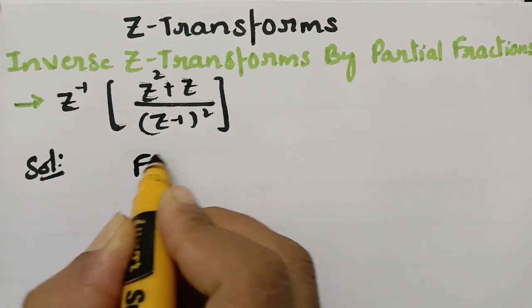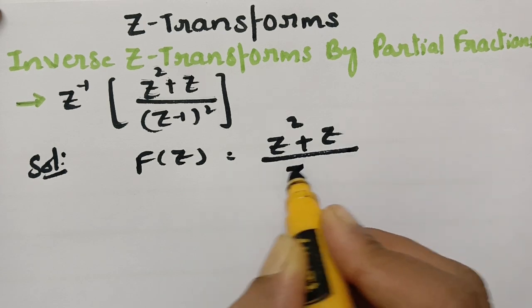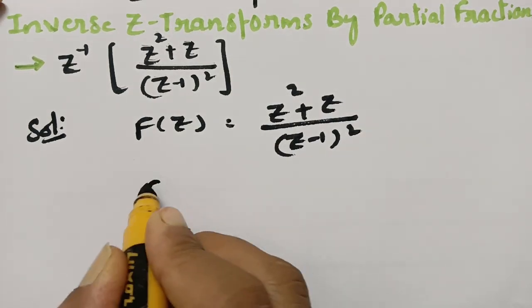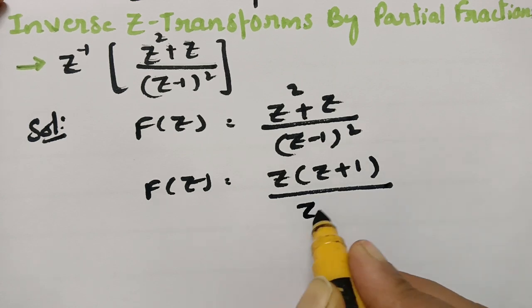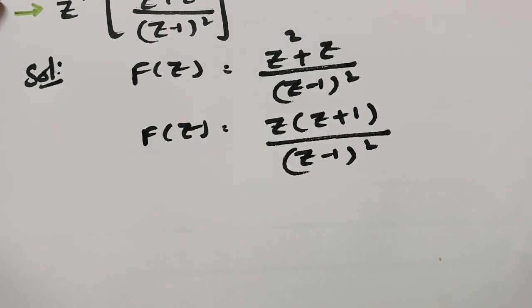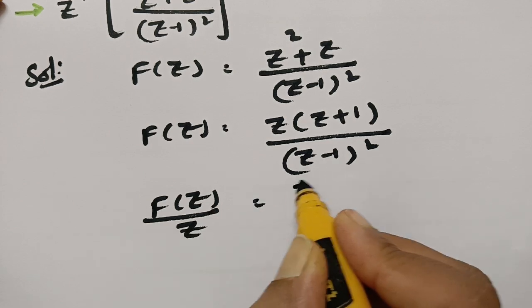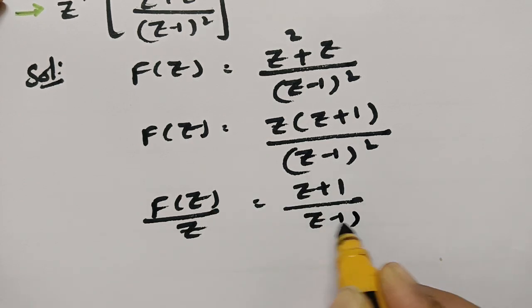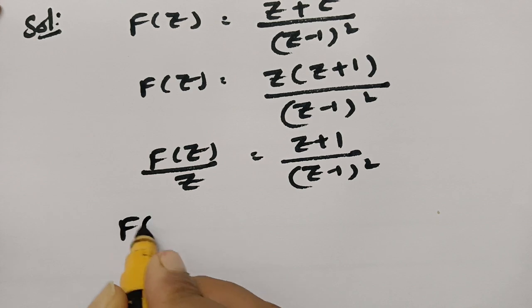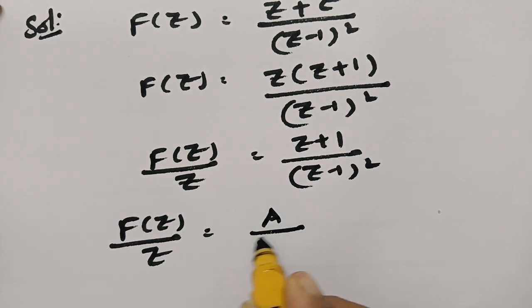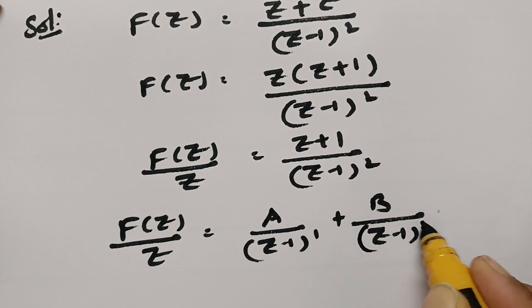In the solution, I am taking F(Z) equal to (Z² + Z) / (Z - 1)². Taking Z common from the numerator, this becomes Z · (Z + 1) / (Z - 1)². Sending Z to the other side, F(Z) / Z is nothing but (Z + 1) / (Z - 1)². Now I have to resolve this into partial fractions. Therefore, F(Z) / Z can be written as A / (Z - 1) + B / (Z - 1)².